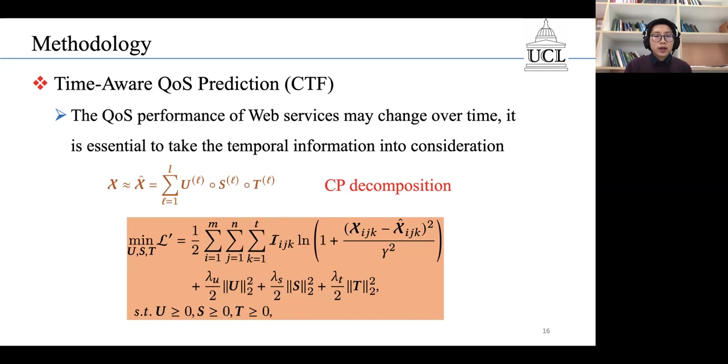We also use the Cauchy loss to measure the difference between X and the predictions. But in this case, we add a non-negative constraint to all the factor matrices to enhance the model's interpretability.